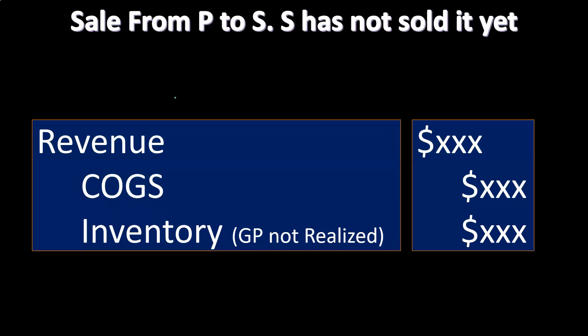Then we have the sale from P to S where S has not yet sold it. What if you sold from the parent to the subsidiary and the subsidiary is just holding on to it? In that case, no sale really took place because S still didn't sell the inventory. So it went just from P to S — the sale is basically not a legitimate sale from an arm's length transaction perspective. So we would reverse the revenue by debiting revenue to take it off the books, reverse the cost of goods sold by crediting it to take it off the books, and then credit the inventory for the gross profit realized — so that's the gross profit going off the books.